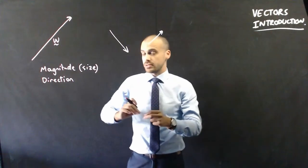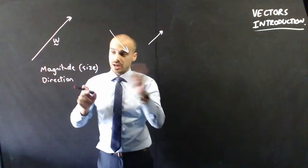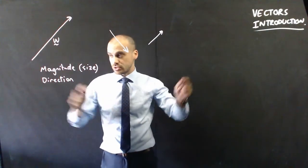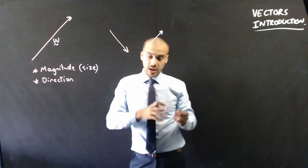So the two things that determine what a vector is are its magnitude—how long it is—and the direction in which it's traveling. Those are the only two properties that make a vector a vector.